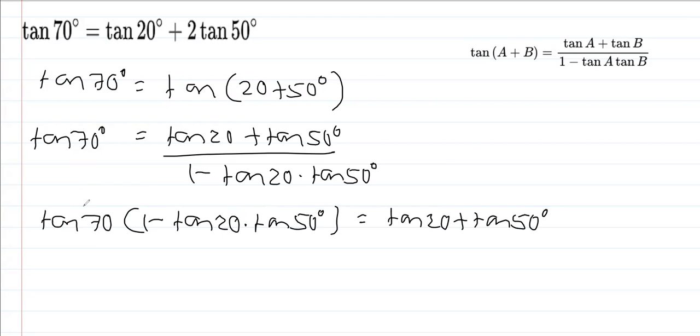If we apply the distributive property, then tan 70° multiplied by 1 minus tan 70° multiplied by tan 20° tan 50° is equal to tan 20° plus tan 50°.